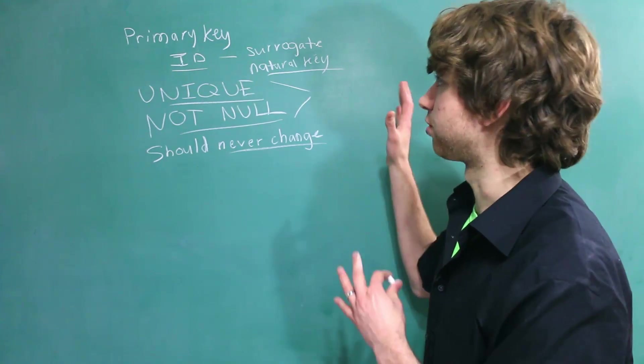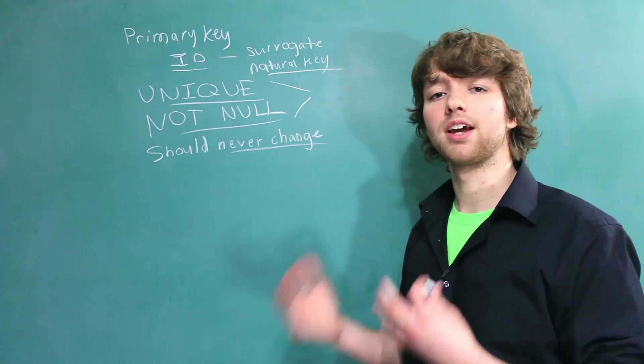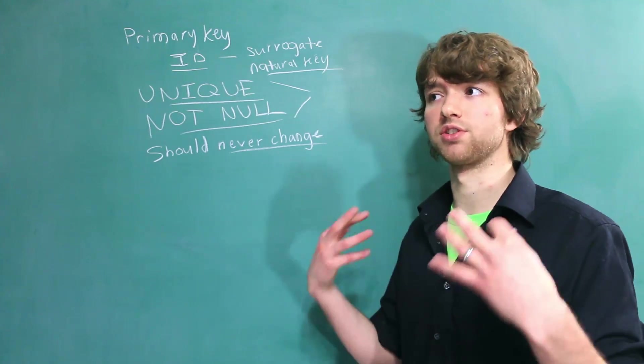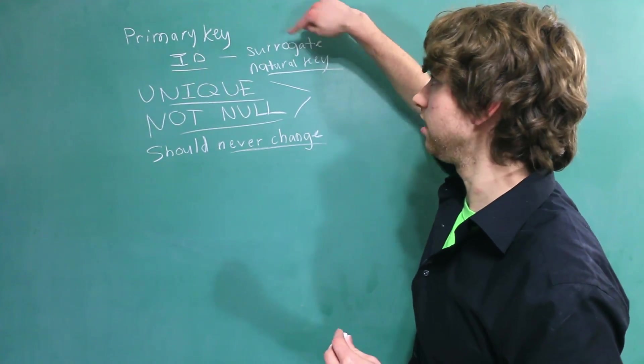So it's pretty simple to think of a natural key for a user table, but when we start creating other tables, it might get kind of complex and complicated trying to figure out what do we need to force every single row to be unique.